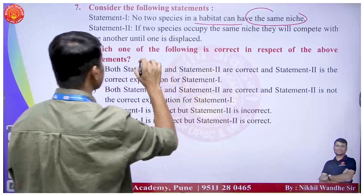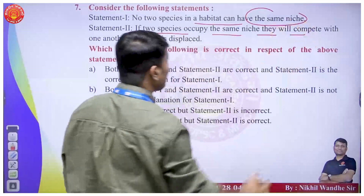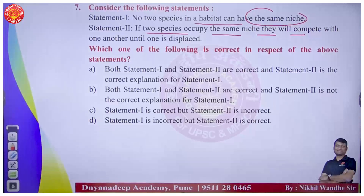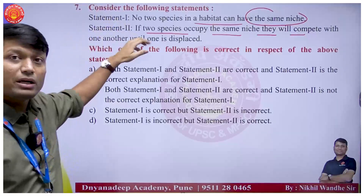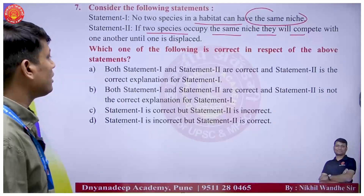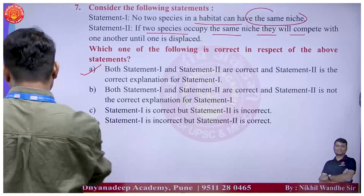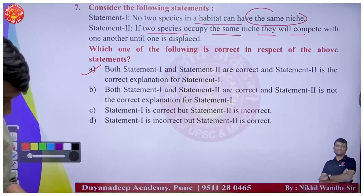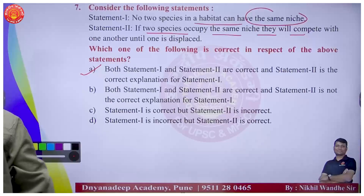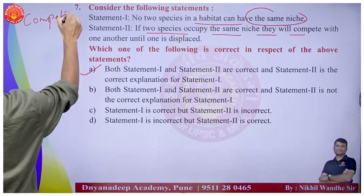Question 7: No two species in a habitat can have the same niche. If two species occupy the same niche, they will compete with one another until one is displaced. Both statements are correct and the second statement explains the first. Option A is the correct answer. This is the concept of competitive exclusion.